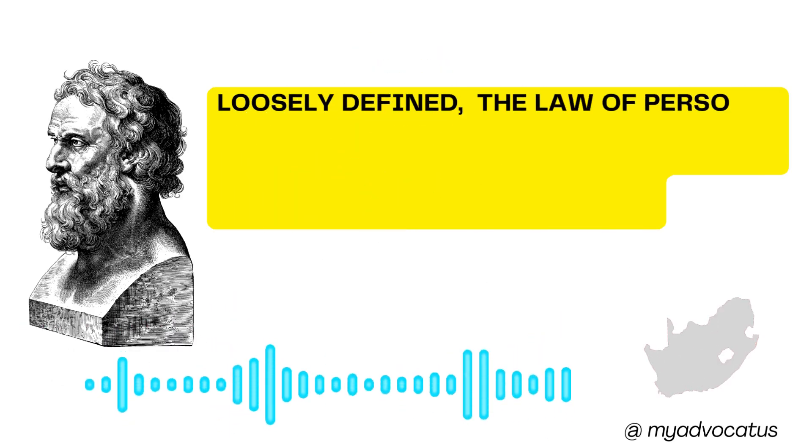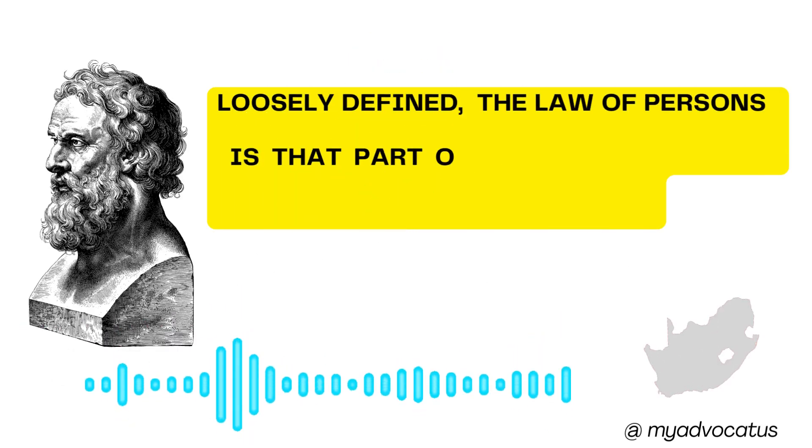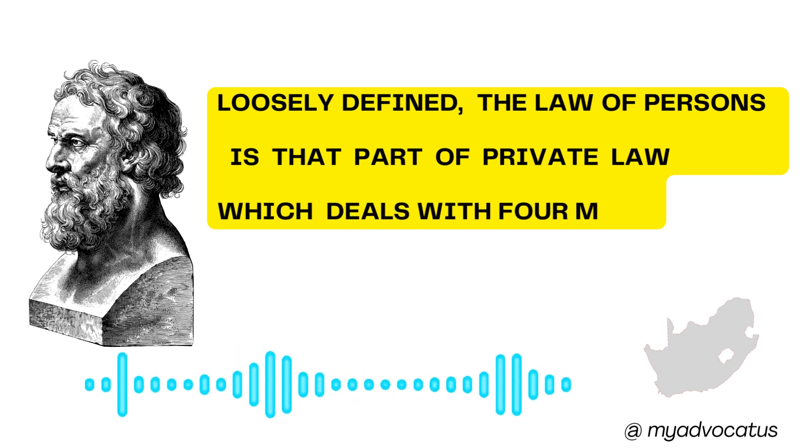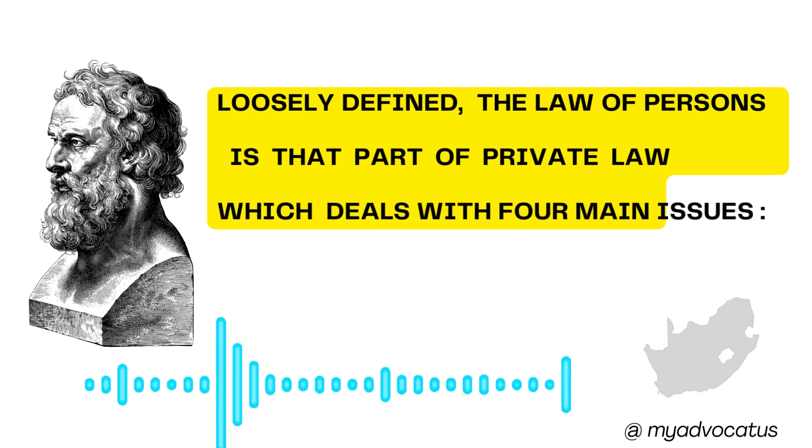Loosely defined, the Law of Persons is that part of private law which deals with four main issues.